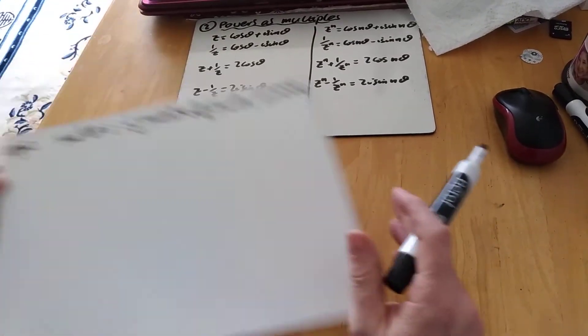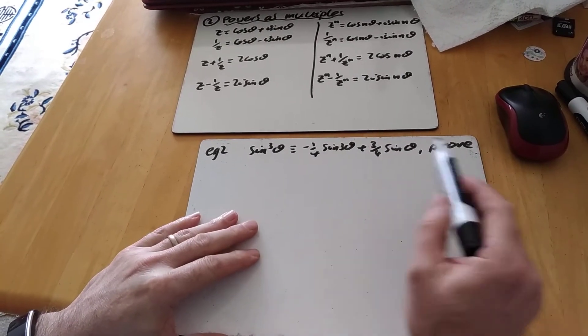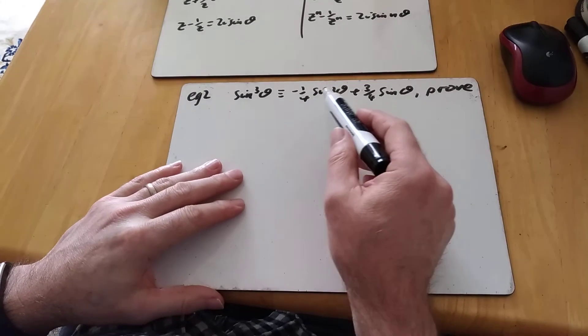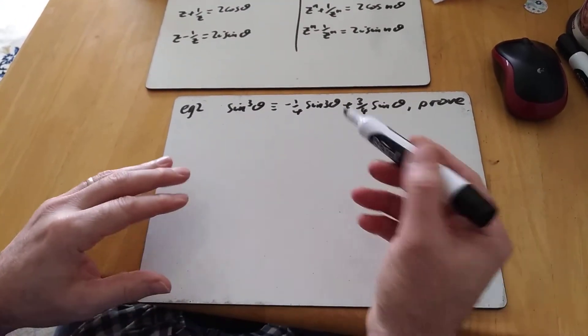I'll put that to one side. We'll look at the second one, one involving sine. Exactly the same process. This would prove or show that sine cubed is minus a quarter sine 3 theta plus 3 quarters sine theta.